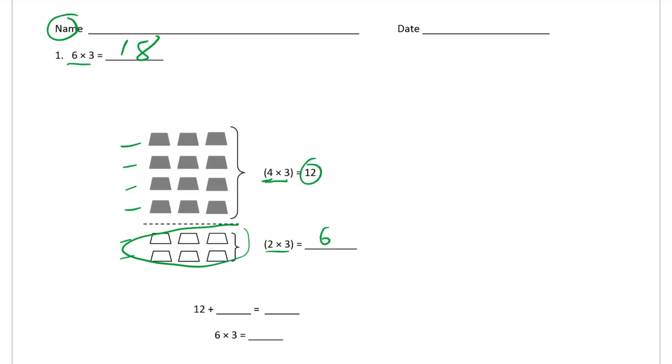So this 12, and now we're going to add the products of these two equations, that 12 plus this six is 18, which is the same as saying, like we had in the beginning, six times three is 18.